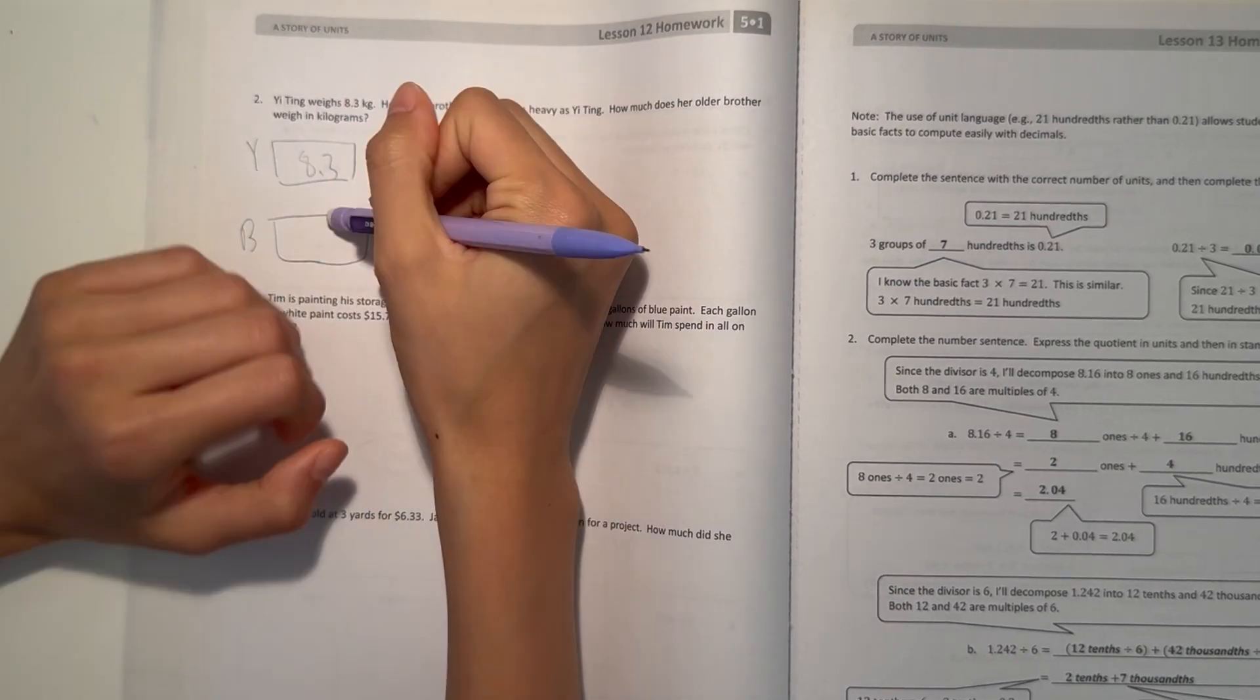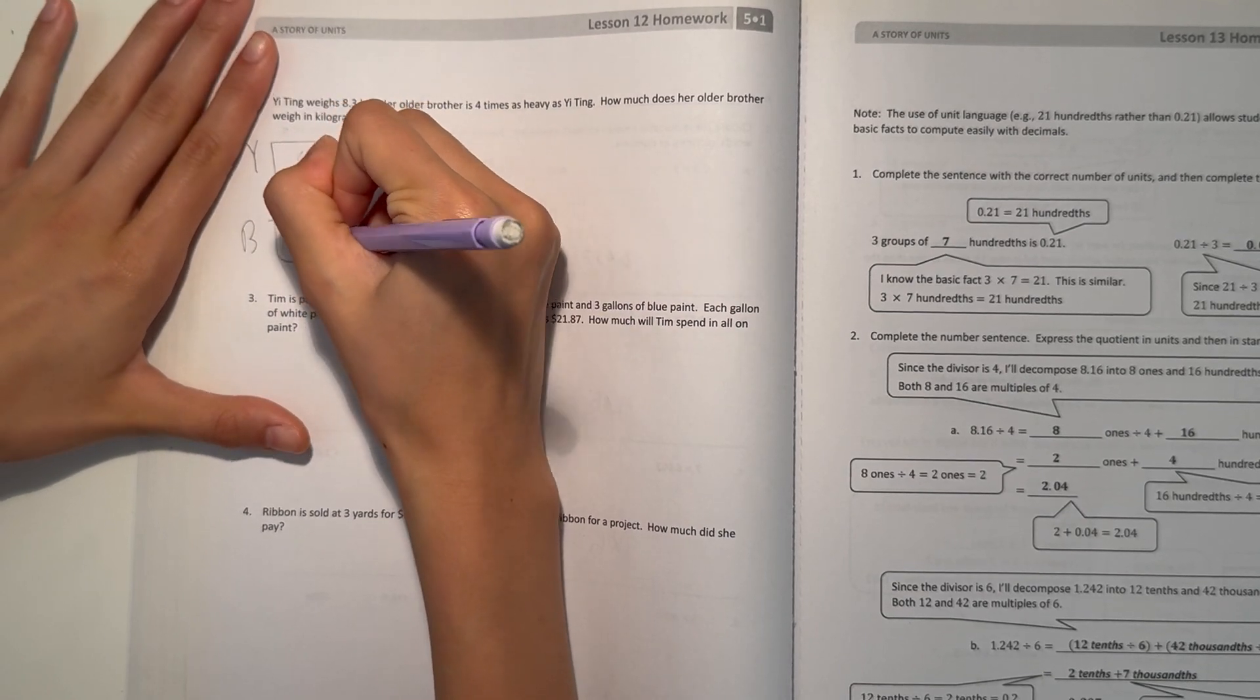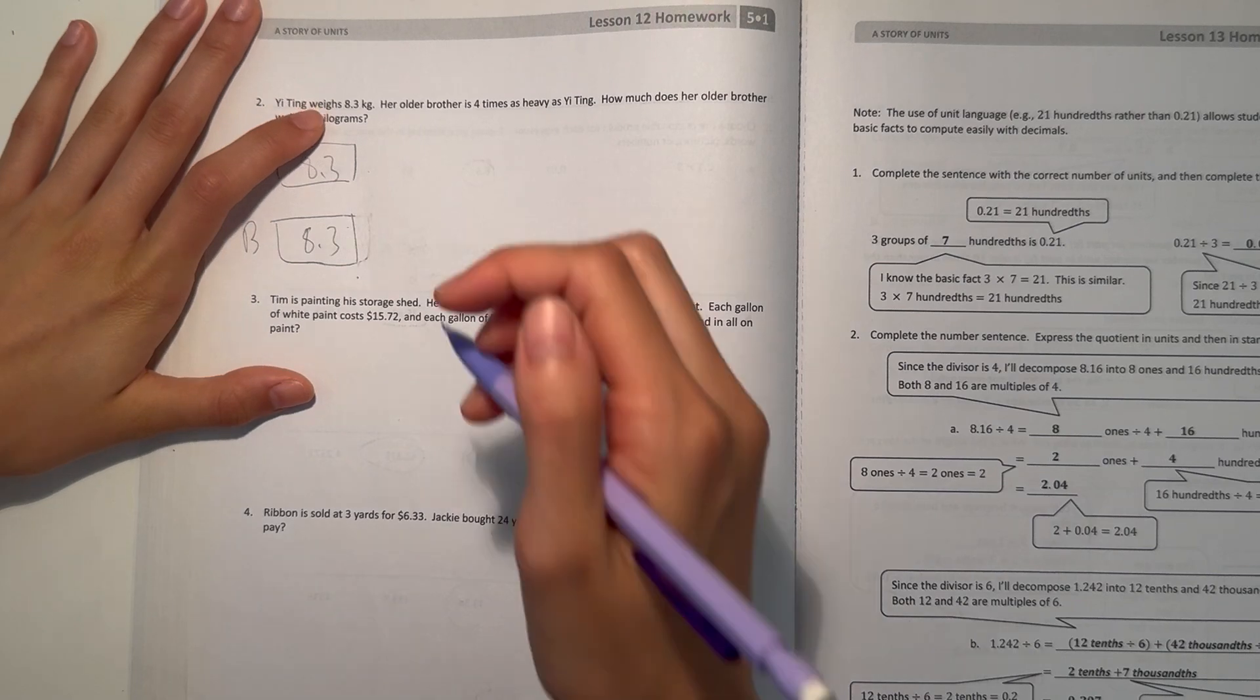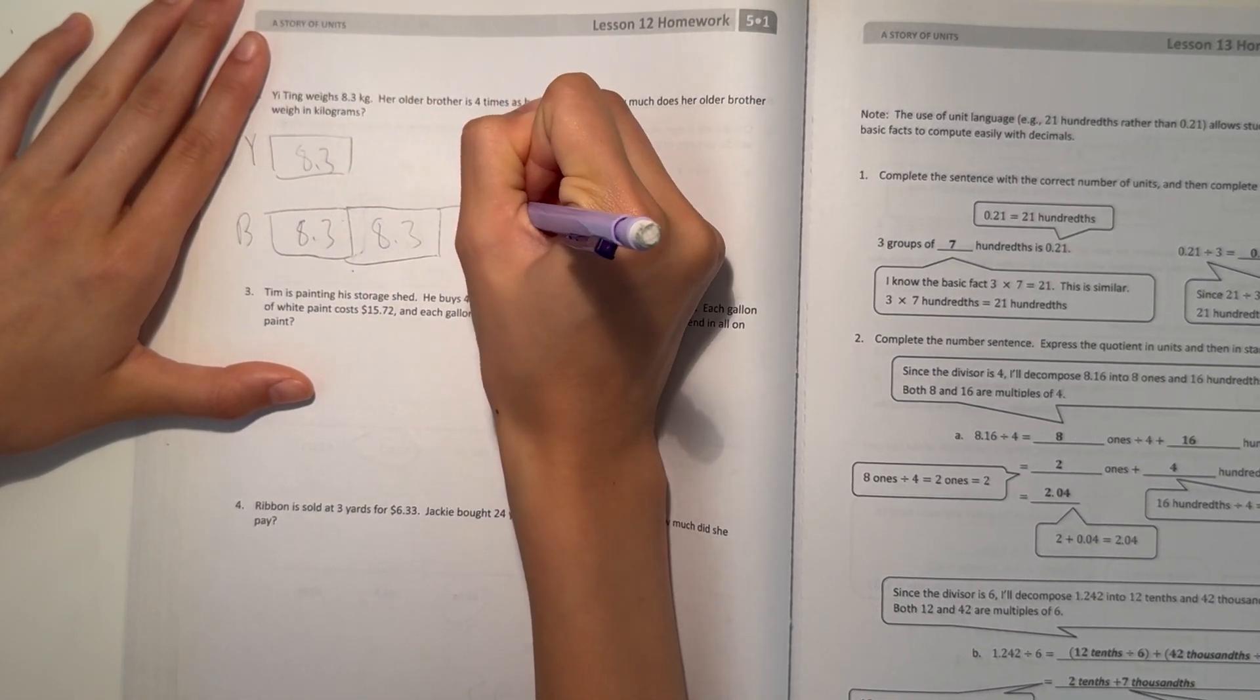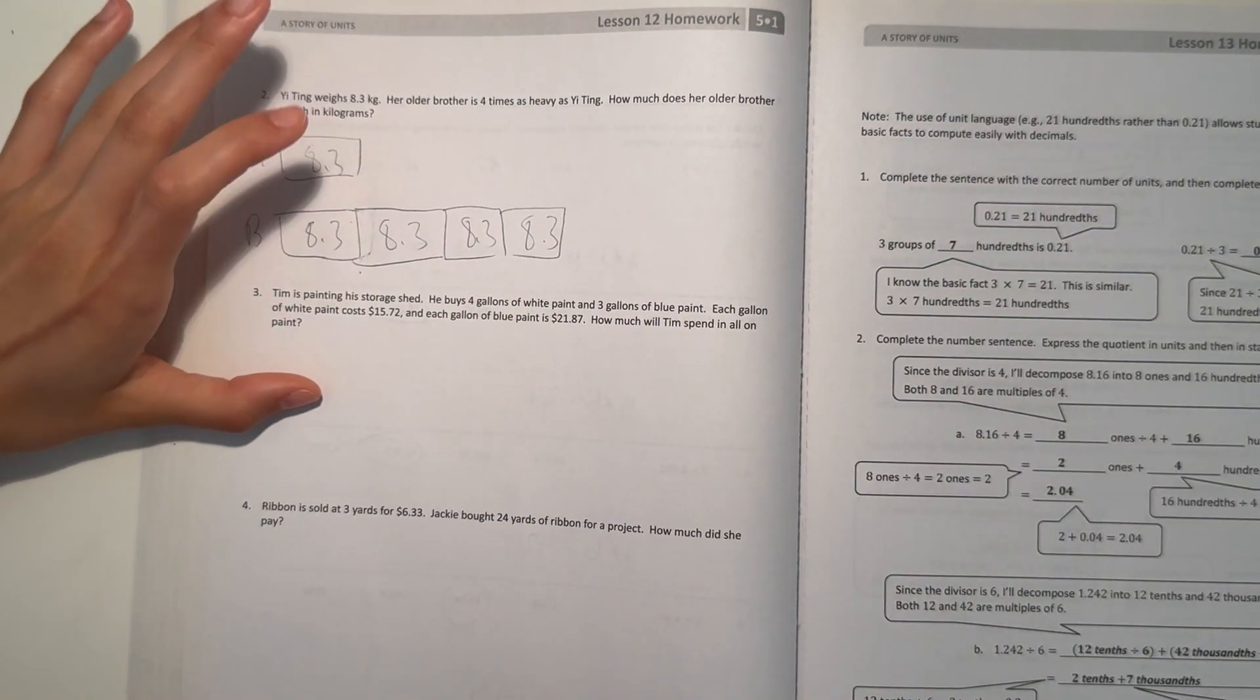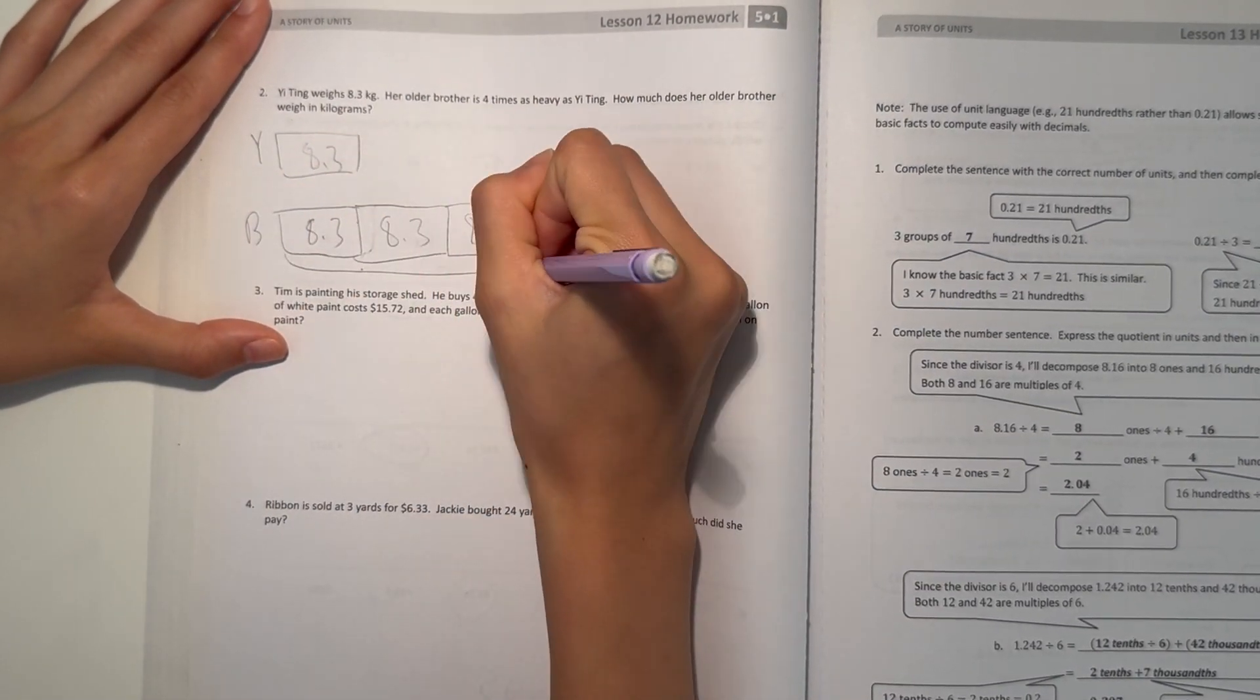Her brother is 8.3 kilograms, but 4 times. That's 1, 2, 3, 4. So this is how much her brother weighs. So we want to find out how much does he weigh in total.